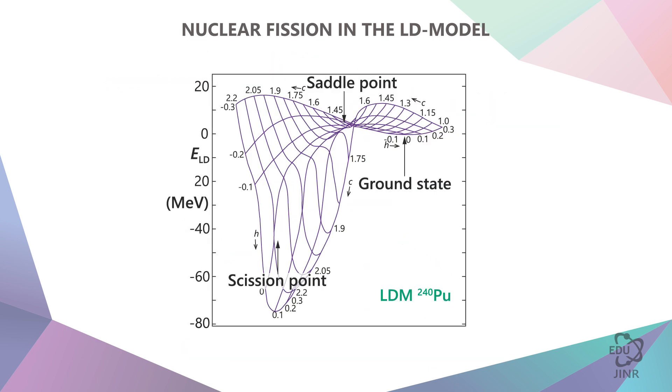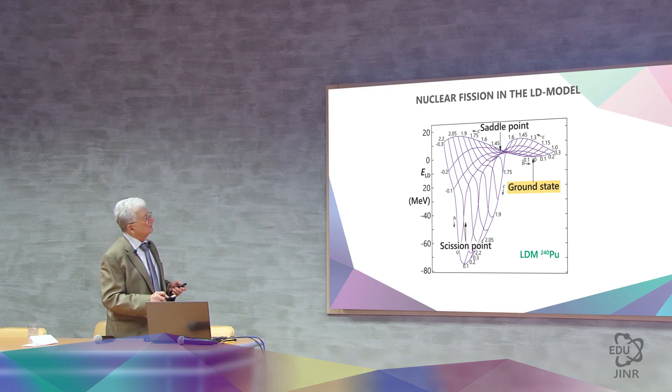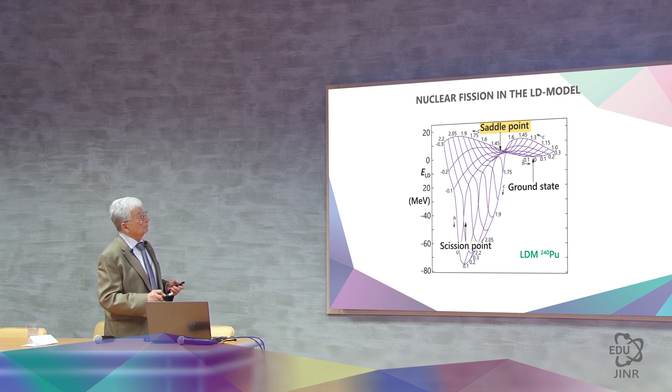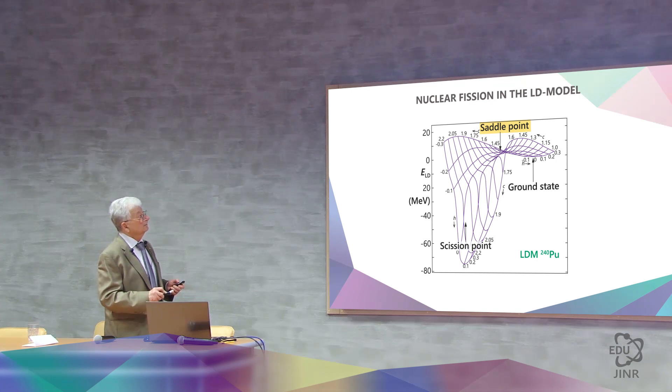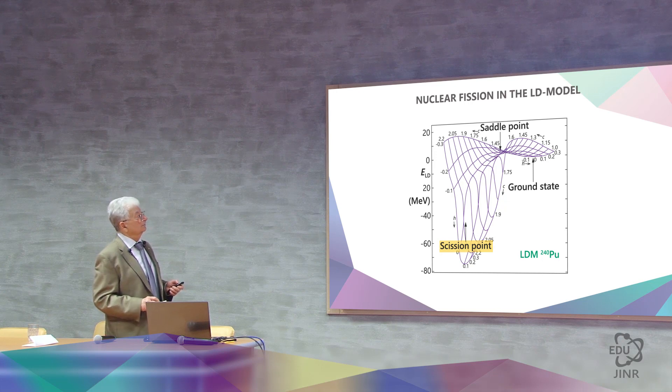In fact, if you illustrate the potential energy of all possible configurations, you will get a channel like this. Here is a spherical nucleus, and this system moves along the bottom of this channel, and then at some point it splits into two fragments. This is the ground state, this is the so-called saddle point, very similar to a saddle, where after the scission point comes. At this point a break occurs. This is the theory.